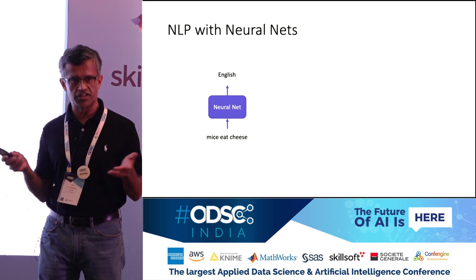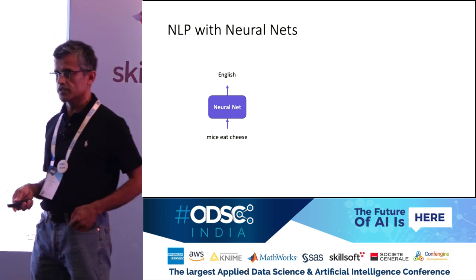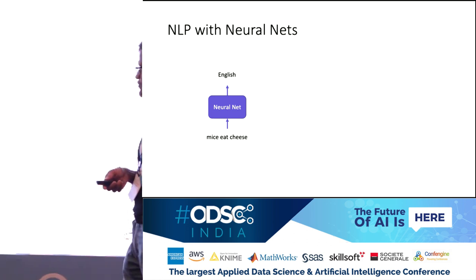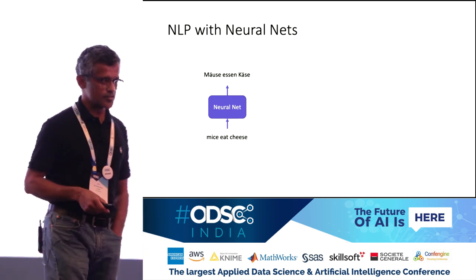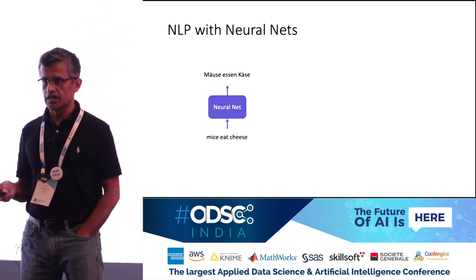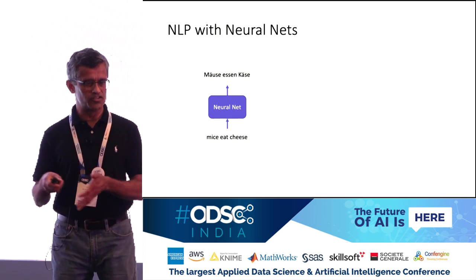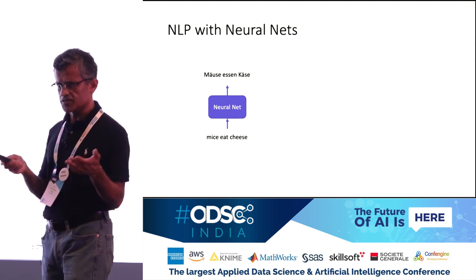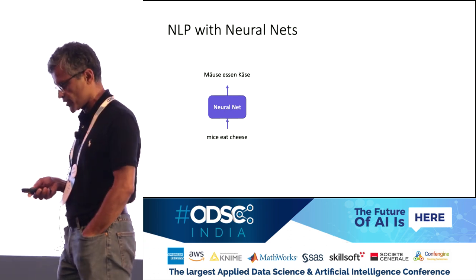Another neural network model may take the input sentence and decide what language it is in — is it Hindi, English, Tamil? Clearly 'mice eat cheese' is English, so we'd like the neural network to output English. Yet another application is to take the input sentence in English and translate it to German: 'Mäuse essen Käse,' which is mice eat cheese in German. There are several such applications one might imagine that a neural network could do.